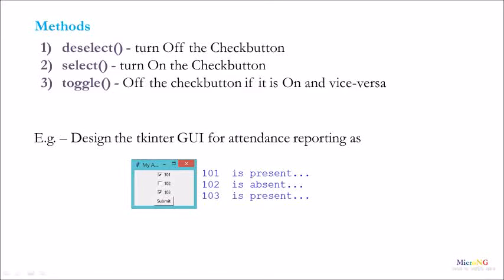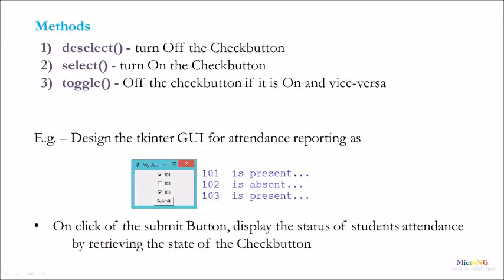Let us see an example of a Tkinter GUI with CheckButtons. We will create a number of CheckButtons to take an Attendance Report. If we select the CheckButton and submit, it will be shown as present. If the CheckButton is unchecked, it will show the respective roll number as absent. On click of the Submit button, the status of each student's attendance is displayed by retrieving the state of the CheckButton.